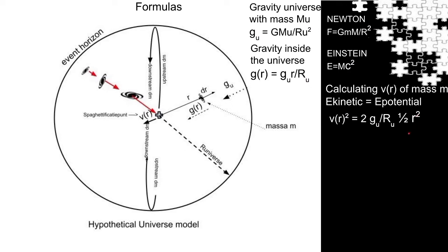Taking the square root from both sides, VR is proportional with R. This part here is a constant.